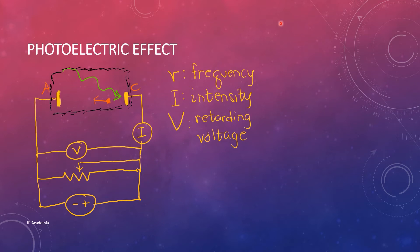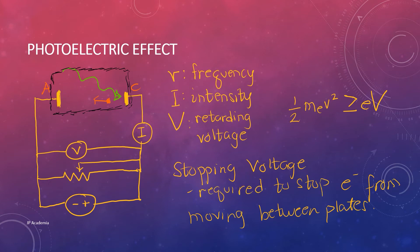When we reverse the polarity of our voltage source, the anode will be negative and the cathode will be positive. If we increase this reverse applied voltage, it will eventually stop the current flow. Note that the electrons must have a KE or kinetic energy greater or equal to the electrical potential energy to reach the collector. This is the stopping voltage, which is measured as a function of the wavelength of light.